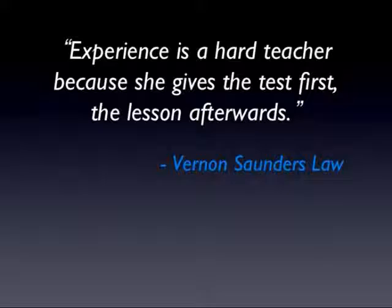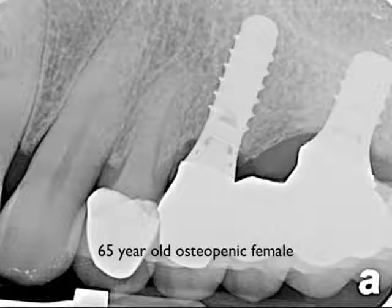We know all about the dip period, and according to this enhanced surface, by four weeks everything should be fine and we should be able to load this implant. That was not the case. At four weeks, I started to torque the abutment on, and being that it was a Morse taper, it started to engage at about 28 but the implant started spinning. I had a real dilemma because I couldn't get the abutment off. She was eventually provisionalized at seven to eight weeks. As Vernon Sanders Law said, experience is a hard teacher because in the real world, she gives you the test first and the lesson afterwards.